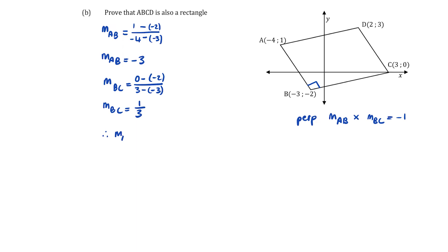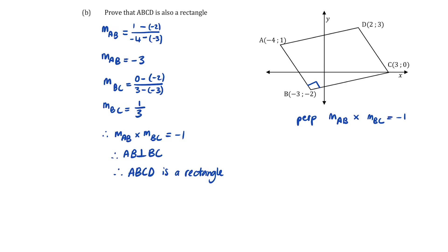Multiplying the gradient of AB by the gradient of BC: negative 3 times one-third equals negative 1. Therefore AB is perpendicular to BC. ABCD is a rectangle because it was already proven to be a parallelogram with an interior angle equal to 90 degrees. You must justify why you've called it a rectangle, not just state the 90-degree angle alone.